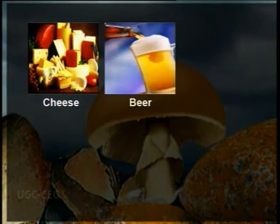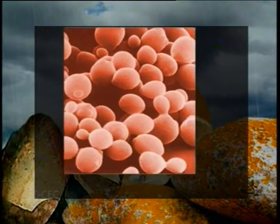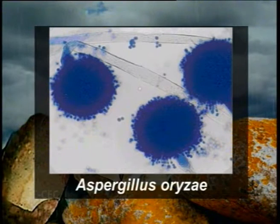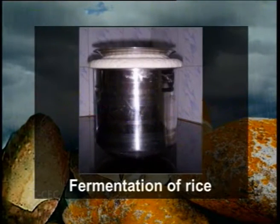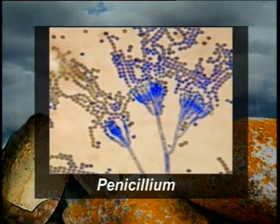Fungi are also used for the production of many kinds of drinks and foods like cheese, beer, wine, bread, cakes, and soya sauce. Fermentation forms the basis for the brewing and baking industry. Baker's yeast, Saccharomyces cerevisiae, is used for the fermentation of sugar into alcohol and carbon dioxide. Brewing relies on the alcohol formed during fermentation — for example, Aspergillus oryzae is used for fermentation of rice to produce wine. In baking, carbon dioxide bubbles allow the dough to rise, making bread lighter. The genus Penicillium is used for the maturation of cheese.